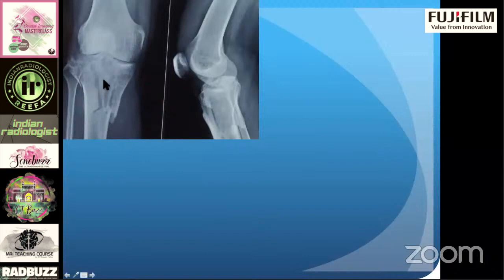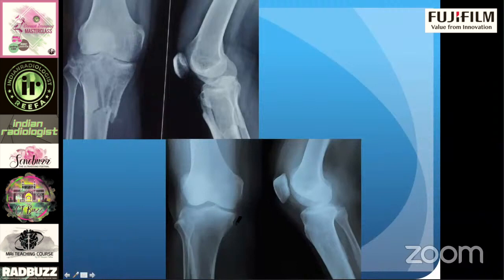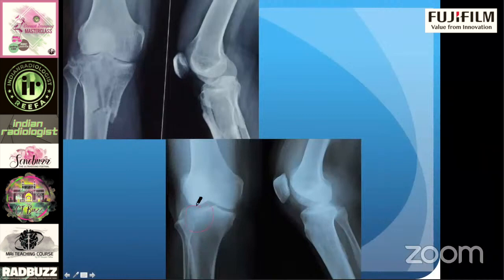This is another example of a very obvious Schatzker fracture — in fact, Schatzker type 5, where there is even a dissociation between the tibial metaphysis and the tibial diaphysis. Whereas here, this is a very subtle Schatzker fracture. If you look at this X-ray hurriedly, I bet you will miss the fracture. But when you have a particular format of how to look at the X-ray, you will pick it up — a lateral tibial plateau fracture, without much articular surface step-off or gap.